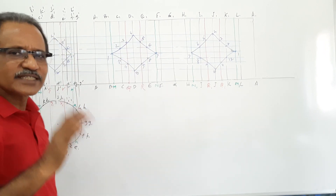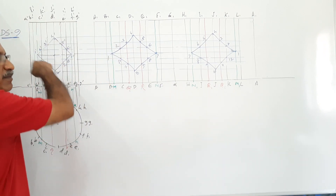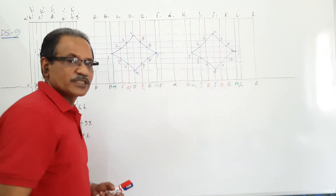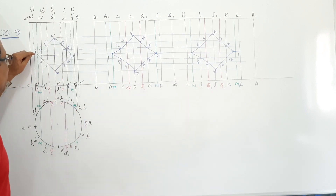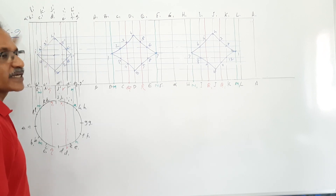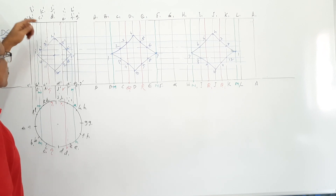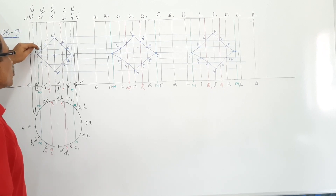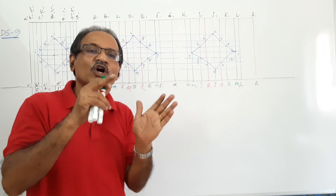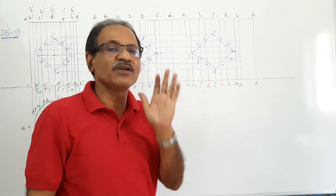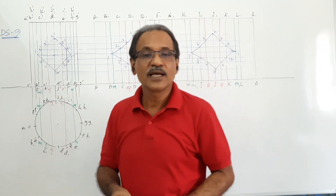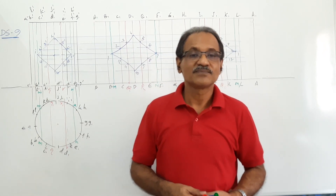Suppose it is a circular hole — use the same procedure. Take a minimum of 12 points, take the corresponding generators, and project them onto the development. You will get an ellipse. This question has also come numerous times. Take the two end points, and if a generator already cuts a point, take one more generator near it. On each quarter of the circular hole there must be four points, giving about 20 points total. A circular hole in a cylinder is a very important question for university examinations. Thank you.